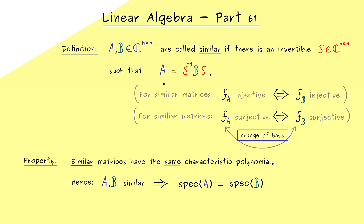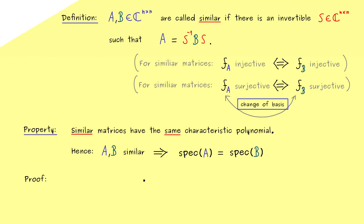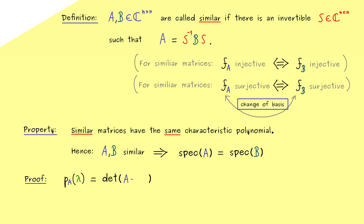At this point, you can also think about what happens with the geometric multiplicities. I can already give you a little spoiler: they will also not change under this transformation. So the dimensions of the eigenspaces will not change, but the eigenspaces themselves could change. As stated, we first want to talk about the characteristic polynomial, which we denote by PA. The variable in the polynomial we choose as the complex number lambda, and by definition this is given by the determinant of A minus lambda times the identity matrix. This is a well-defined polynomial of degree n.